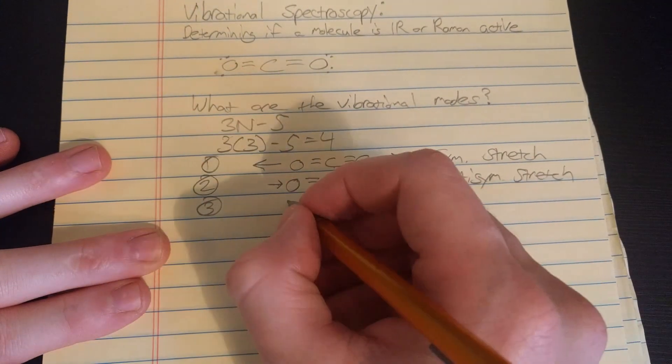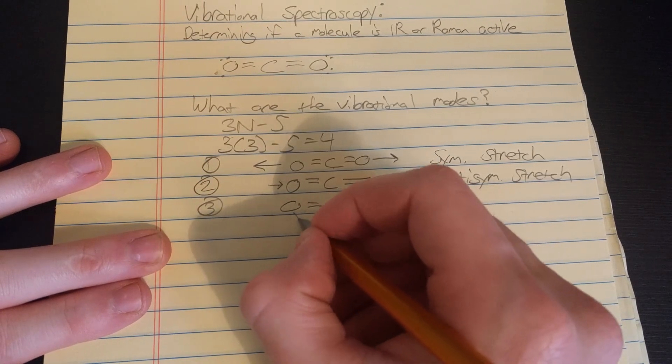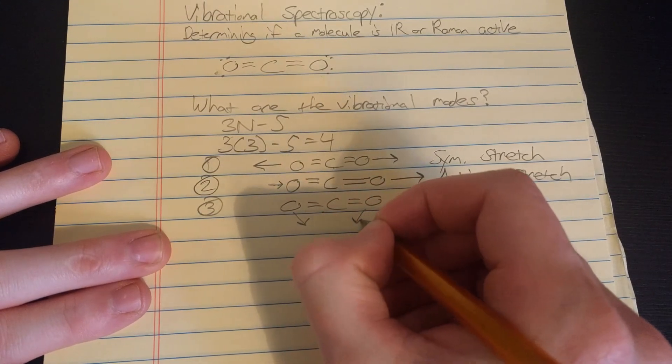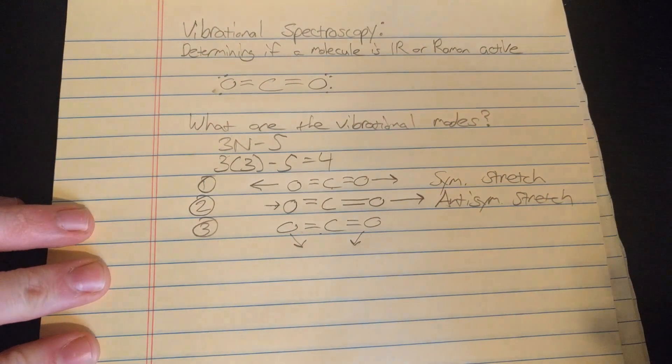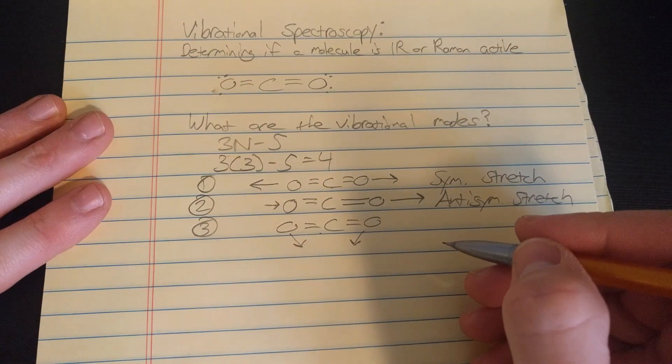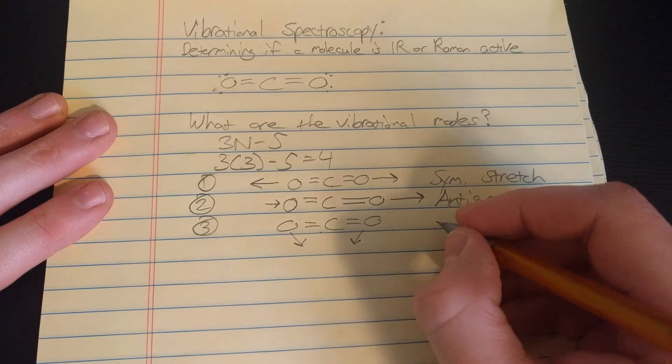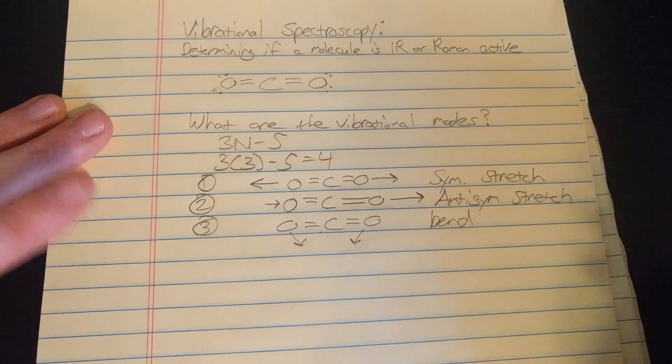Another vibrational mode is if both oxygens bend down essentially to make the molecule not planar anymore, they're not linear anymore. It would sort of bend so it's more shaped like a triangle like water. This would be called the in-plane bend or just bend.